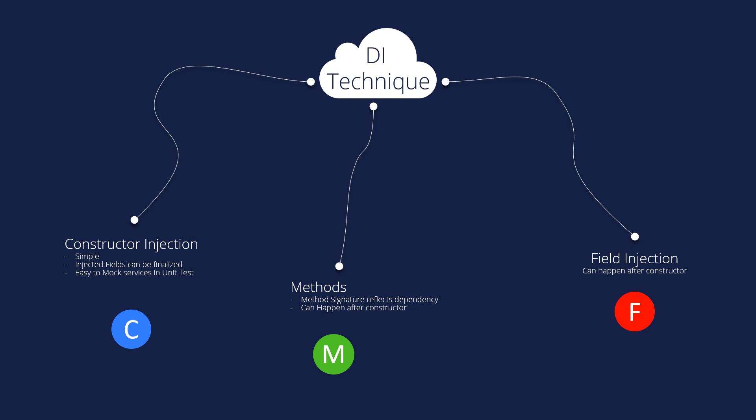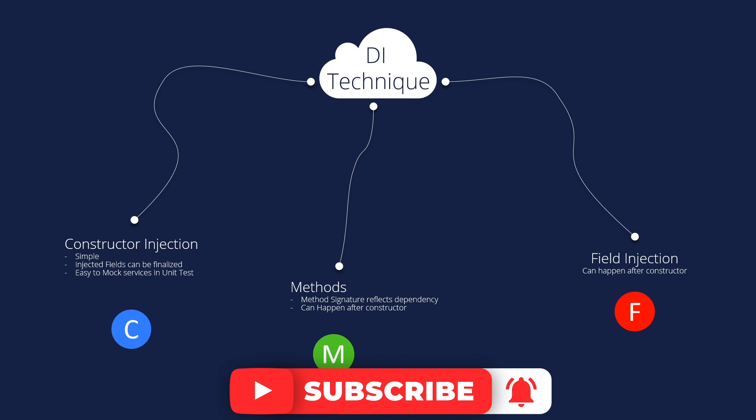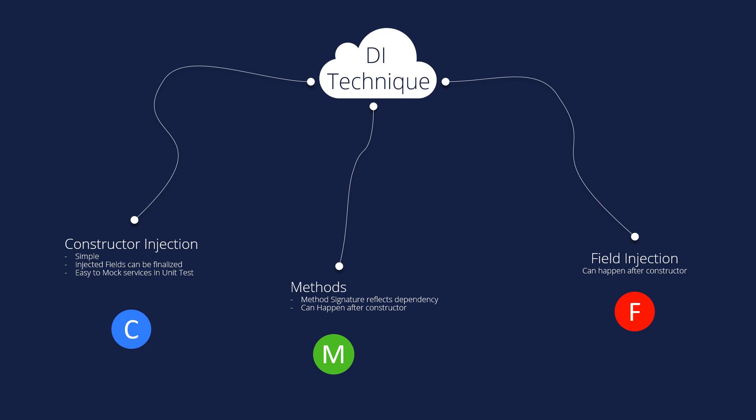We are going to see in this video how to make constructor injection and the differences between these types. The second one is method injection — the method signature reflects the dependency. It can happen after the constructor injection or without it. The third, field injection, can also happen after the constructor.